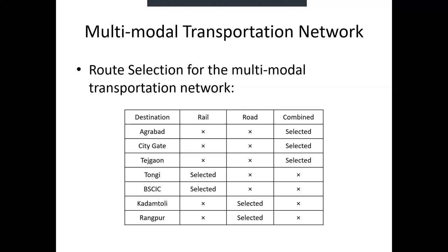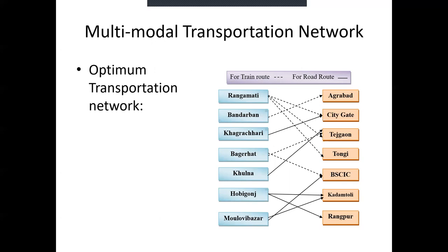This is the transportation network in brief. Dotted lines indicate the selected rail routes and solid lines indicate the selected road routes. For example, considering the destination Tejgao, we can see the road route is selected for Khulna and rail routes are selected from Bagherat and Rangamati.